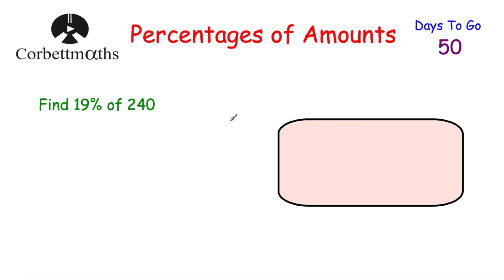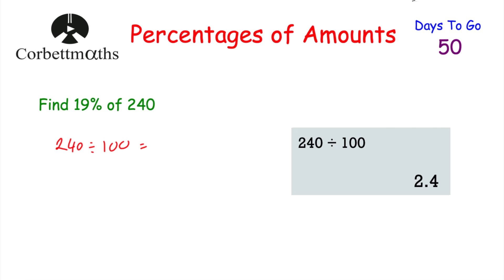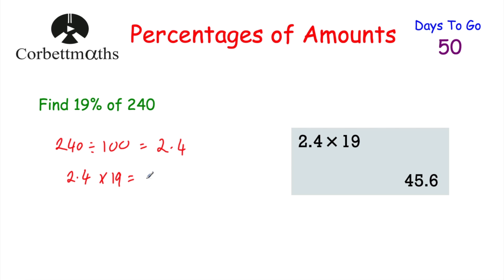Let's look at a calculator question. Find 19% of 240. To find 19% on a calculator, I can divide by 100 to find 1%. So 240 divided by 100 equals 2.4 — that's 1%. Now multiply by 19 to find 19%: 2.4 multiplied by 19 equals 45.6. So 19% of 240 is 45.6.